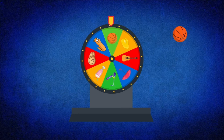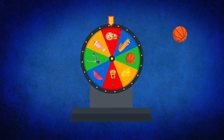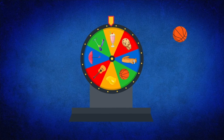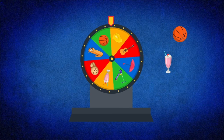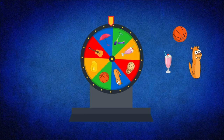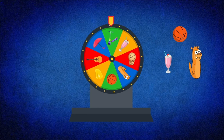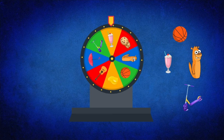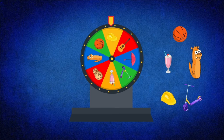Our pictures are basketball, milkshake — oh, I love milkshakes — orange otter, scooter, and construction hat. Now that we've got all five of our words, let's see what actions we'll do for each one.